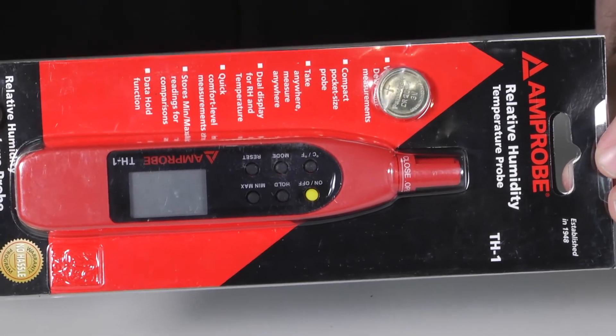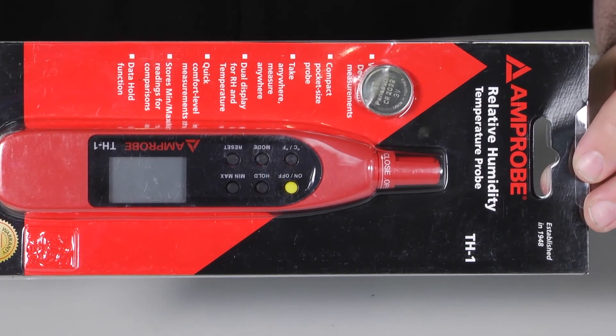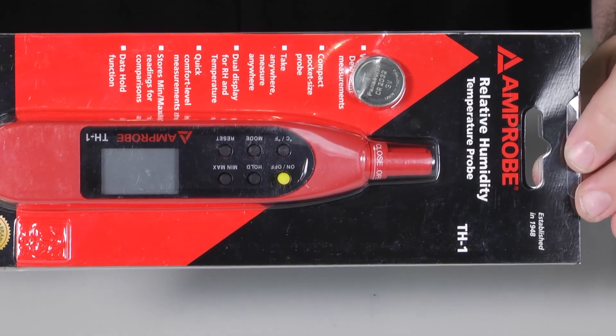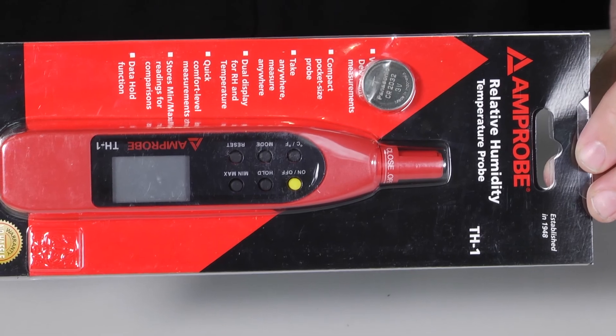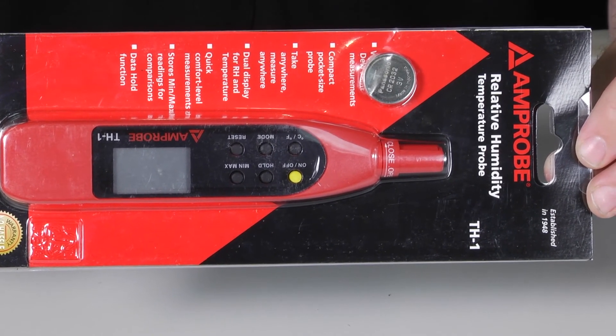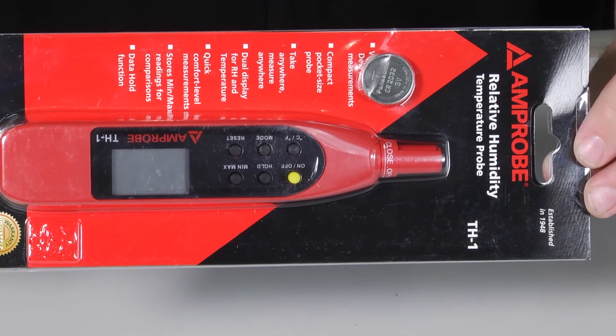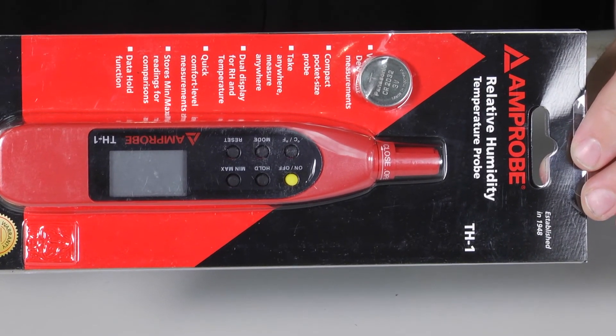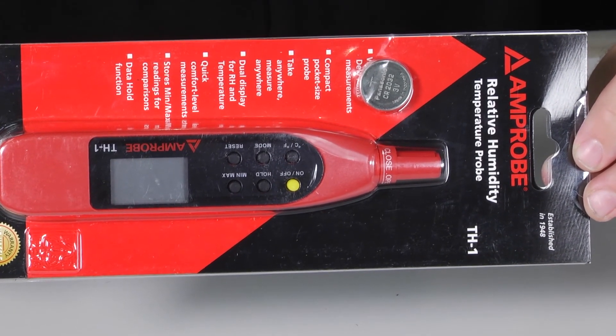And look, we've talked about the value of having a psychrometer before, but if you want to know how to charge a system that's got a fixed metering device, you've got to have a psychrometer for indoor wet bulb temperature. If you want to calculate total heat of a condensing unit or the air conditioner of what it's absorbing, you can take the wet bulb numbers and convert them to enthalpy.